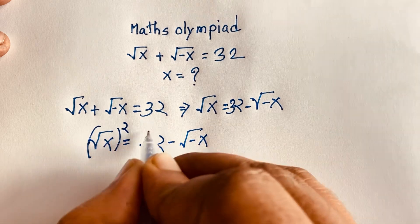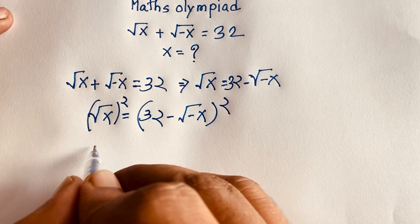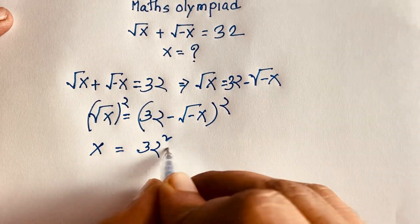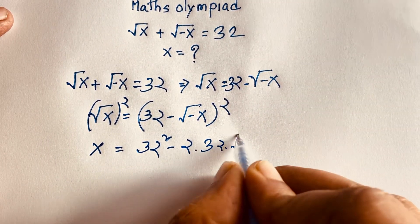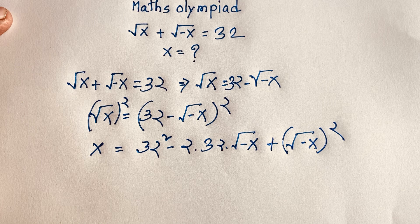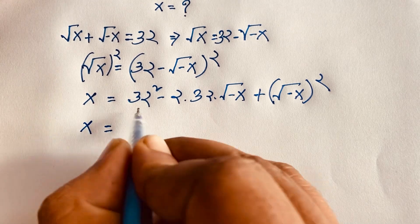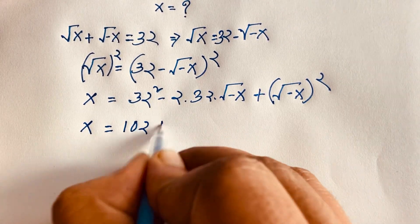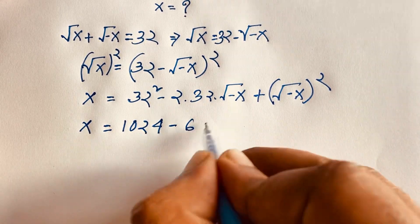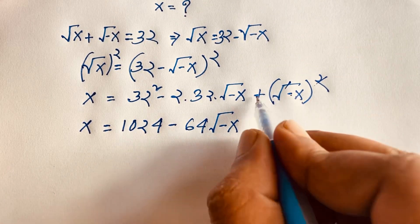Then I use both sides whole square, because we want to remove the square root — so the square root is cancelled and we get x on the left. We know that (a minus b) whole square equals a squared minus 2ab plus b squared. So x is equal to 32 squared minus 2 times 32 times square root of minus x, plus the square root of minus x squared, which gives negative x.